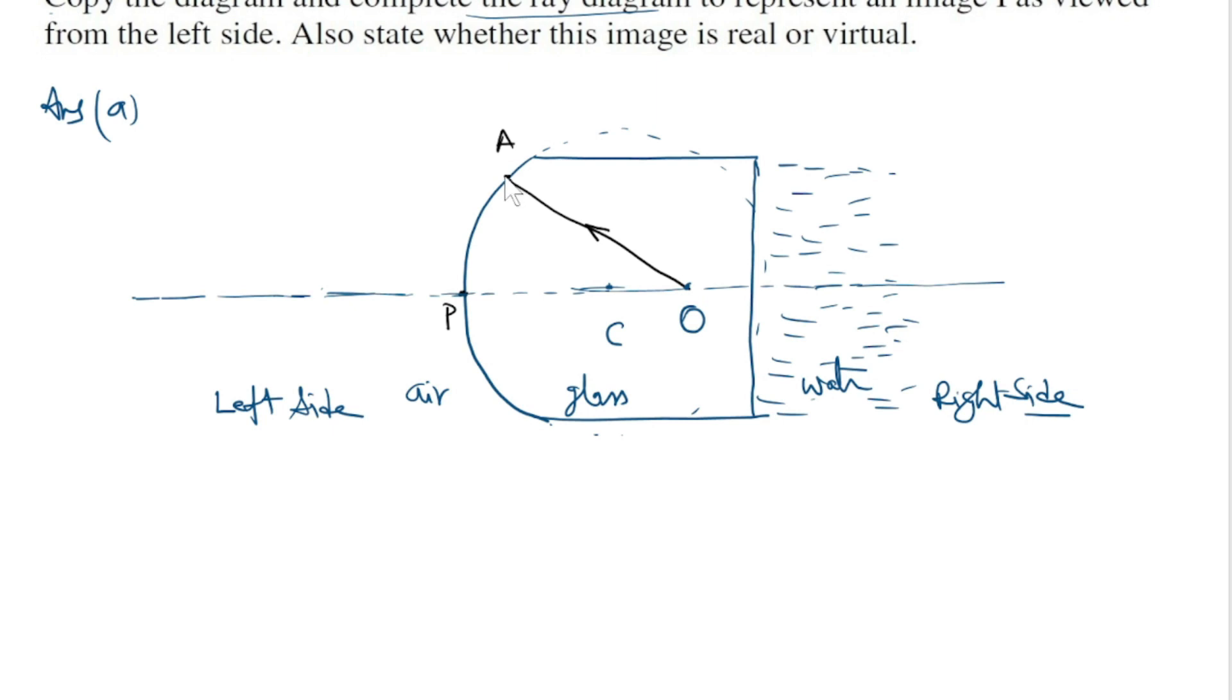To complete the ray diagram, I need to draw a tangent at point A. Thus the normal at point A should pass through C.